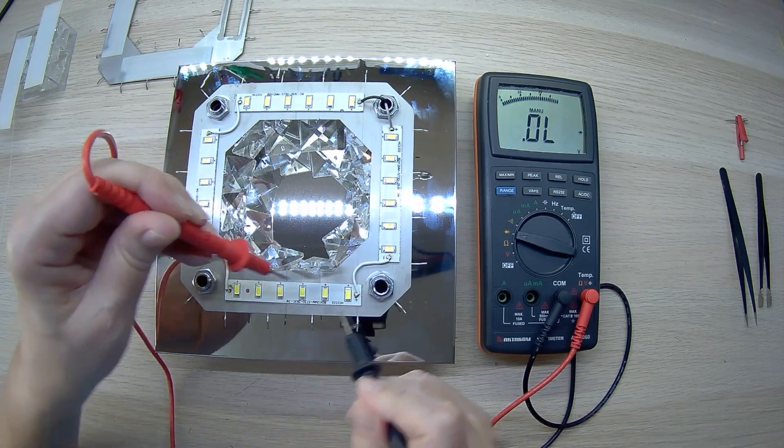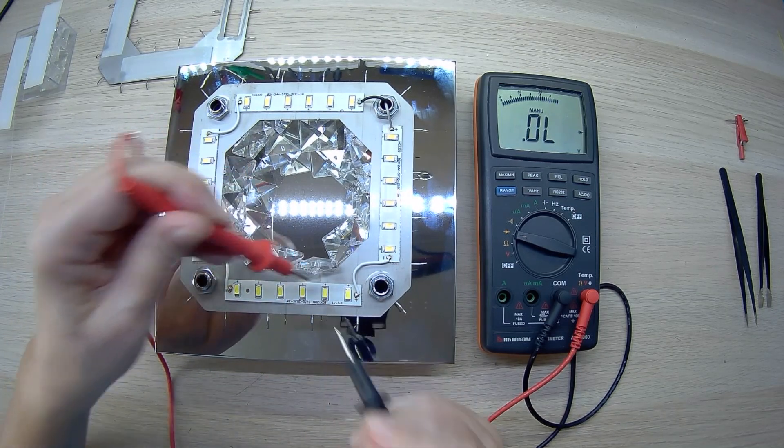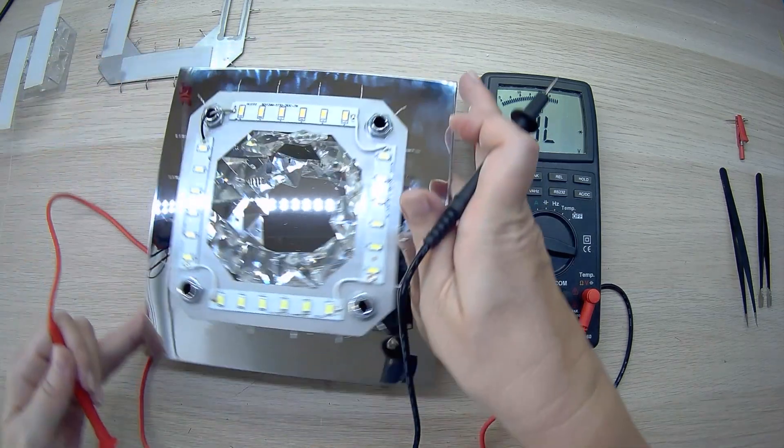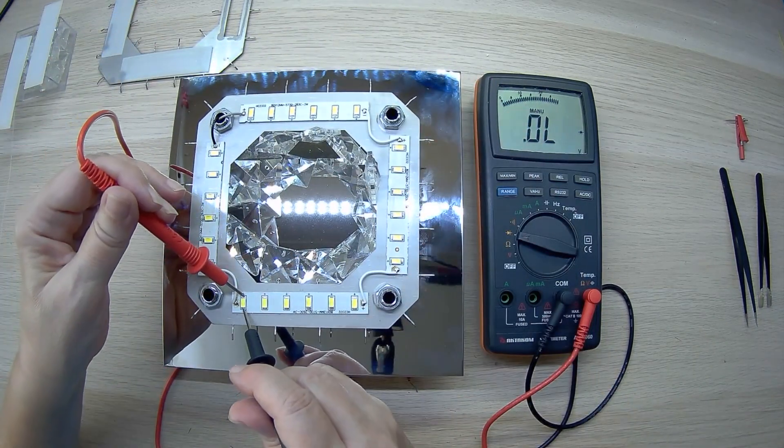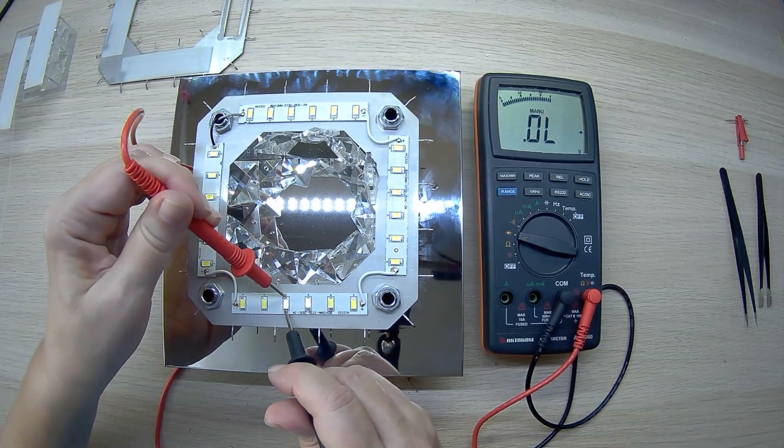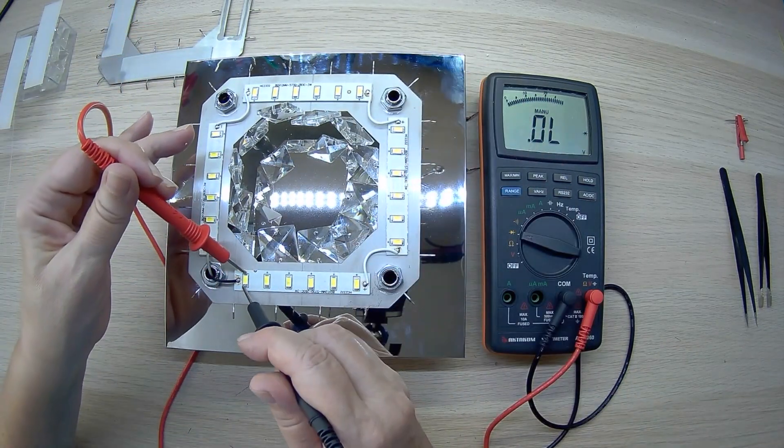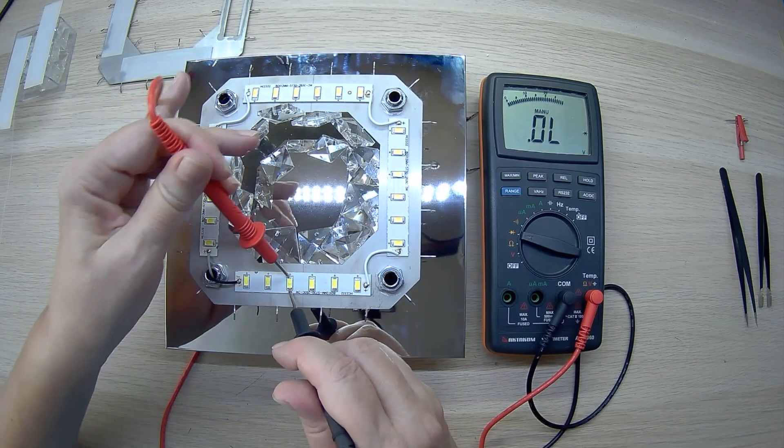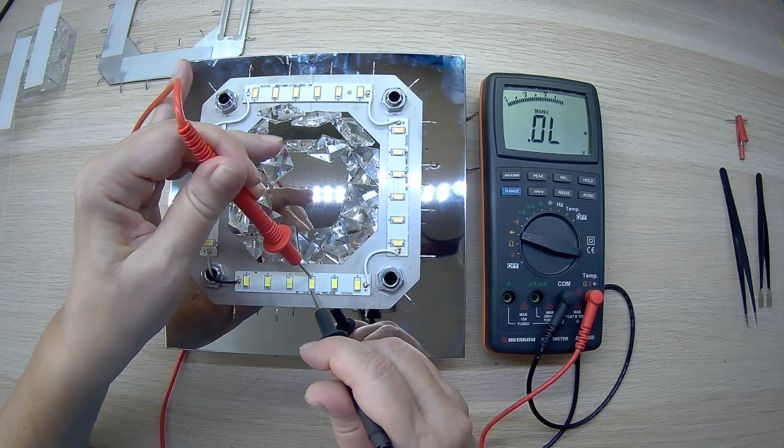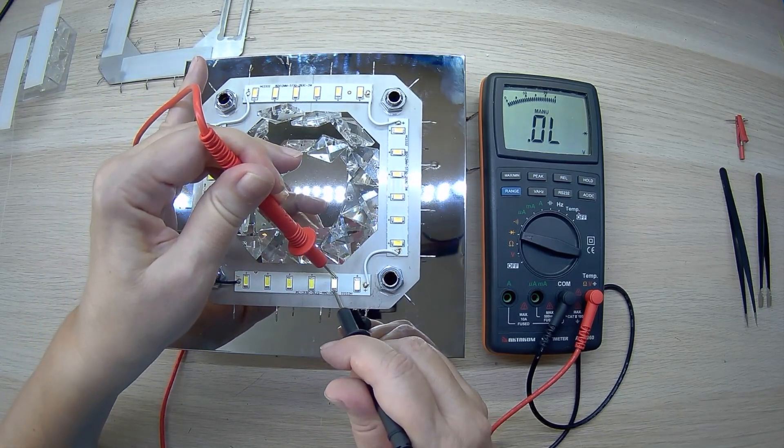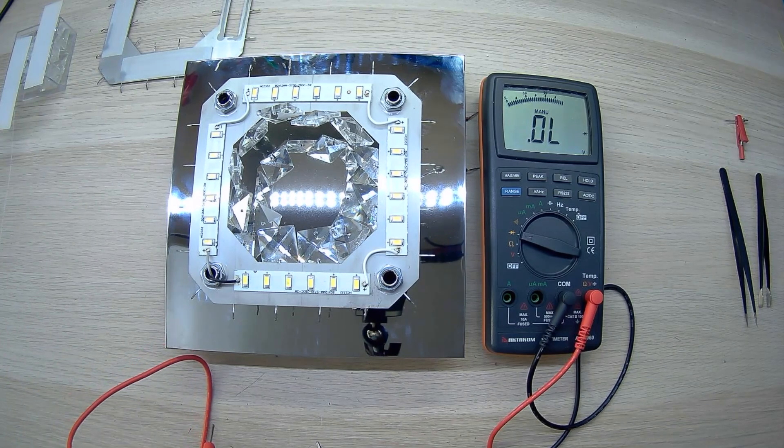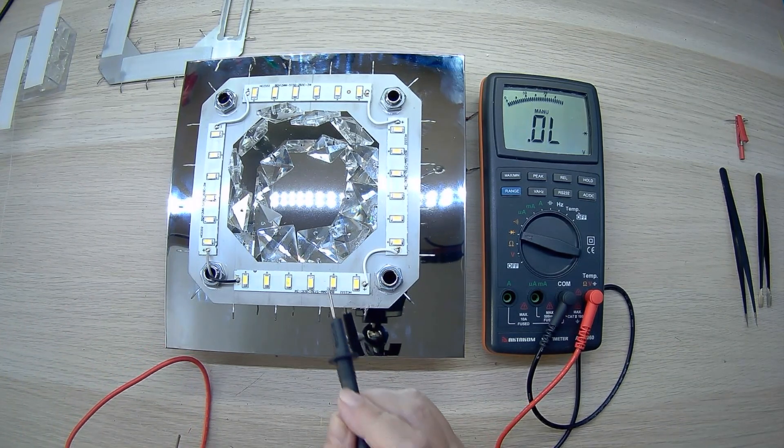We start the LED test and immediately see that the working diodes begin to light up. The explanation for this is simple. Three volts from the multimeter is enough to power and light the LED in direct mode. Direct connection is connecting the plus of the multimeter battery to the plus of the LED and the minus of the multimeter respectively to the minus of the LED.